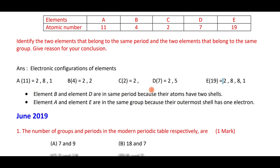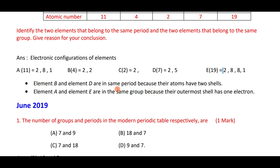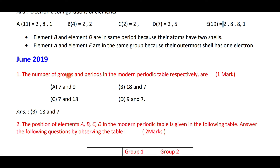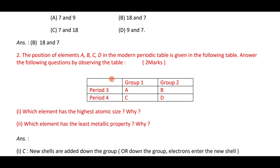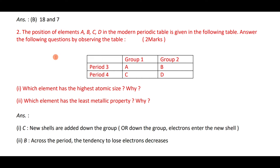The number of groups and periods in the modern periodic table: 18 groups and 7 periods — option B. Atomic size increases down the group because new shells are added, so the answer is option C. The element with least metallic property is option B because the tendency to lose electrons decreases across the period.